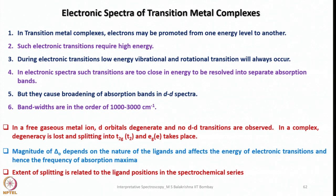The magnitude of ΔO or ΔT depends on the nature of the ligands and affects the energy of electronic transitions and hence the frequency of absorption maxima. For example, if you are considering weak field ligands, you can look into the spectrochemical series. How a given position for a ligand in the spectrochemical series is arrived at is by considering the donor and acceptor properties of the ligands.